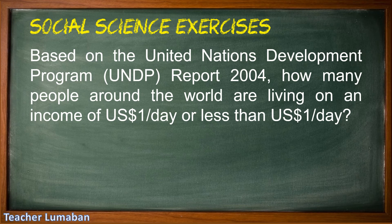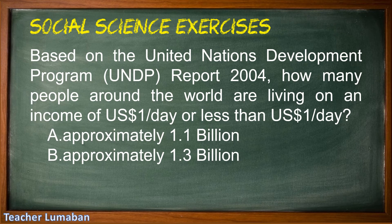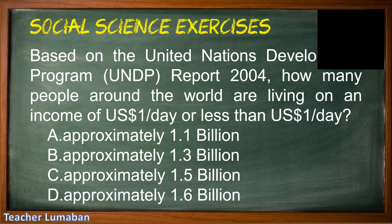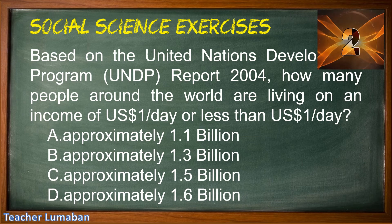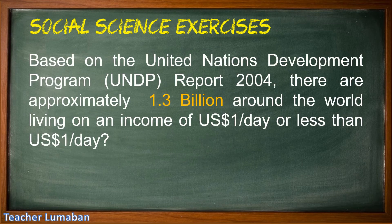Based on the United Nations Development Program (UNDP) report 2004, how many people around the world are living on an income of US$1 per day or less? Letter A approximately 1.1 billion, Letter B approximately 1.3 billion, Letter C approximately 1.5 billion, Letter D approximately 1.6 billion. The correct answer is Letter B, approximately 1.3 billion people around the world are living on an income of US$1 per day or less.